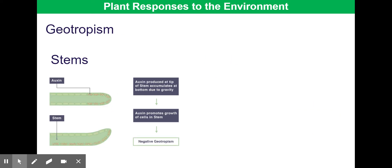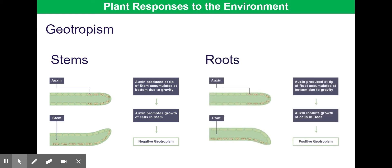For geotropism, auxin is again responsible. Auxin responds to gravity by moving downwards. Initially auxin is evenly distributed, but it accumulates at the bottom of the stem due to gravity. Since auxin promotes cell growth in stems, this leads to negative geotropism — the stems growing upwards, away from gravity. In the roots, auxin similarly accumulates on the bottom side due to gravity, but since auxin inhibits root cell growth, the roots end up growing downwards in the direction of gravity — positive geotropism.